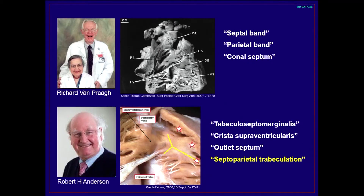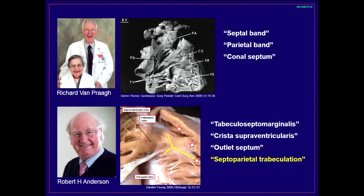The morphology of tetralogy of Fallot has been well described by Dr. Bumpurra and Dr. Anderson in the contemporary era, but they used somewhat different terminologies. Dr. Bumpurra used the term 'septal bend' for the Y-shaped prominent muscle bundle supporting the pulmonary valve and tricuspid valve at the right ventricular septal wall. Dr. Anderson described it as 'trabecular septum marginalis.' For the muscle bundle extending from the infundibular septum toward the right ventricular free wall, Dr. Bumpurra described it as 'parietal bend,' but Dr. Anderson described it as 'crista supraventricularis.'